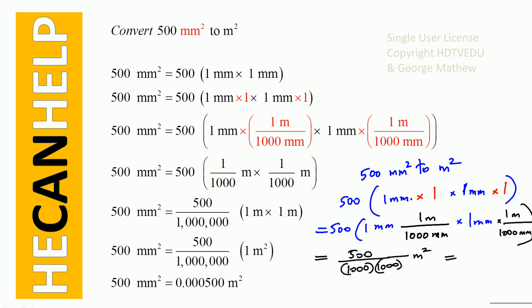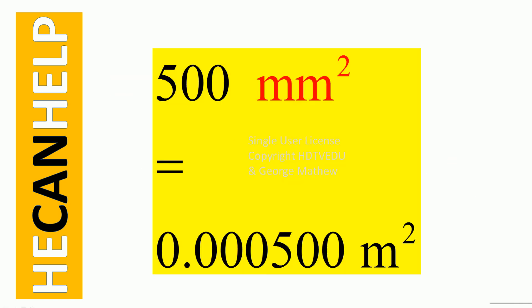That is 500 divided by 10 to the power of 6 — remember, 1, 2, 3, 4, 5, 6. So 500 divided by 10⁶ gives us 0.0000005 meter squared. So 500 millimeter squared is equal to 0.0000005 meter squared.